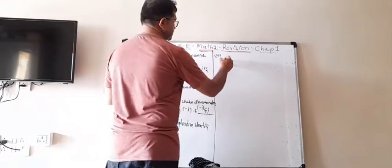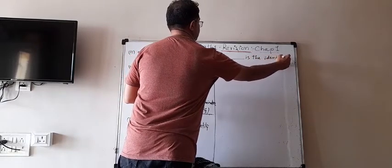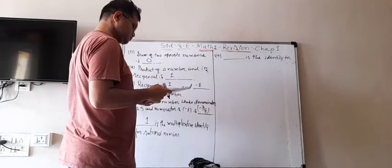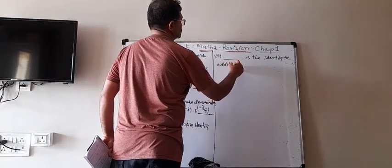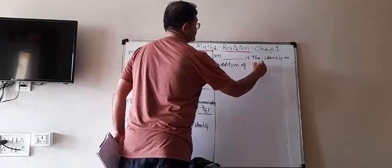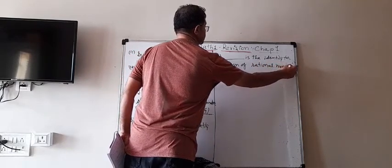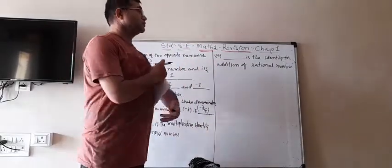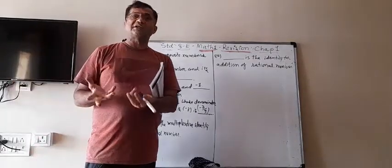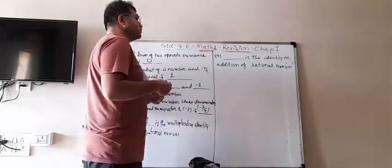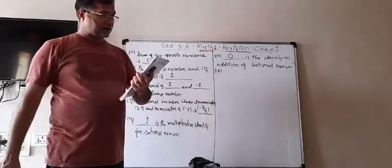Number 16. Blank is the identity for addition of rational numbers. What should we add to a rational number to get the number itself? Obviously nothing — meaning 0. So 0 is the identity for addition of rational numbers.